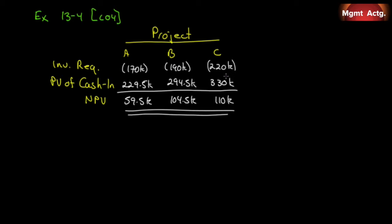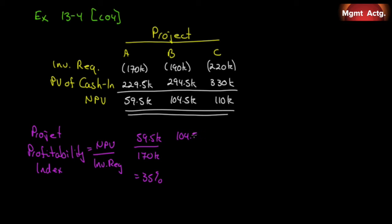Required number one: compute the project profitability index for each project. So we need the project profitability index, which is net present value over the investment required. So what do we have? In A, we will get 59.5k over 170k, which will give us 35%. For project B, our net present value is 104.5, the investment required is 190, that will give us 55%. And for C, it was 110 over the required 220, will give us 50%.